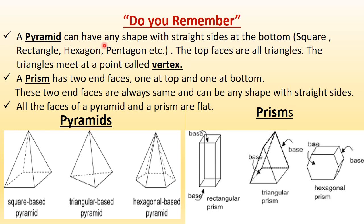Whenever the pyramid has a square shape at the bottom, it is a square base pyramid. If the base is triangular, it is a triangular base pyramid. If the base is hexagonal, it is a hexagonal base pyramid. If it is an octagon, it would be an octagonal base pyramid. If it was a pentagon, it is a pentagonal base pyramid. The bases might be different, but the top faces are always triangles — they can be 3, 4, or 5 triangles — and these triangles are meeting at a point called the vertex.